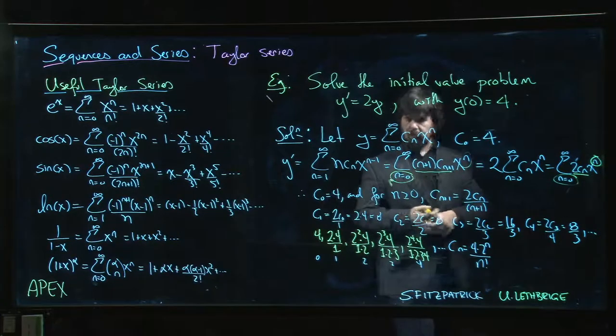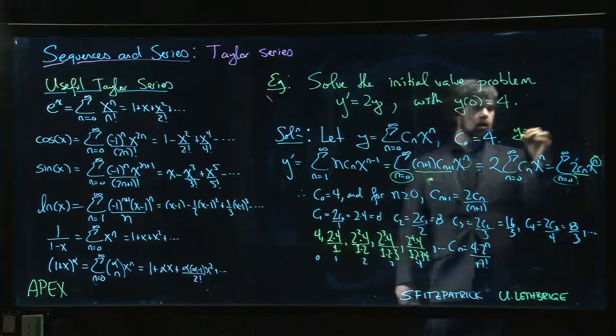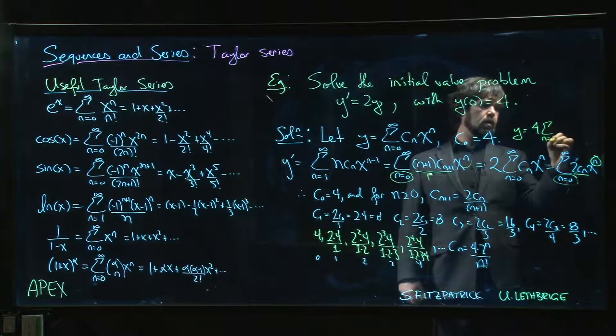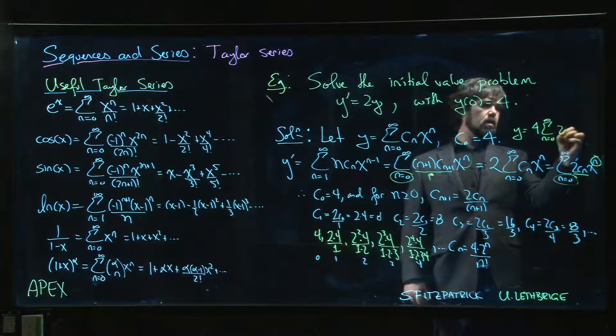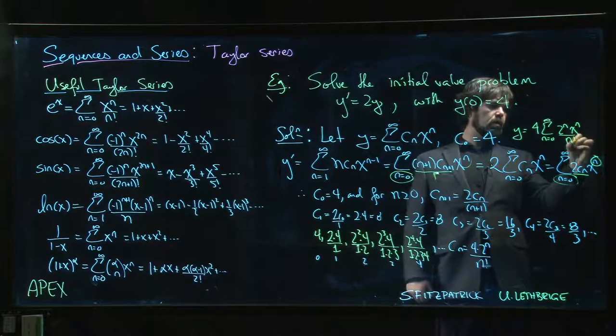So that means if we come back to here, that means that y, if we pull out the 4, y is 4 times the sum n going from 0 to infinity, 2 to the n x to the n over n factorial.